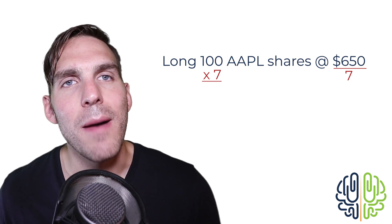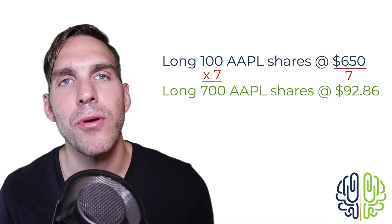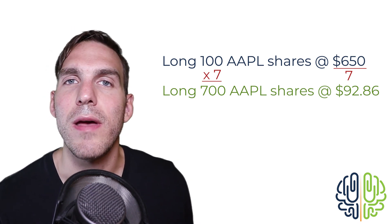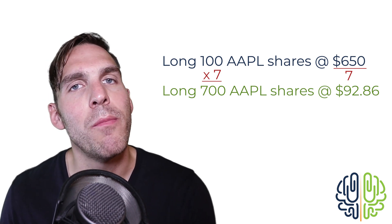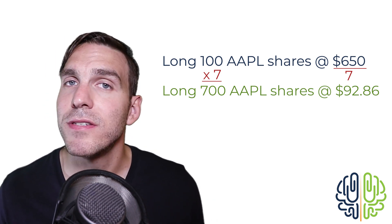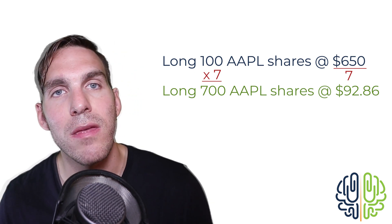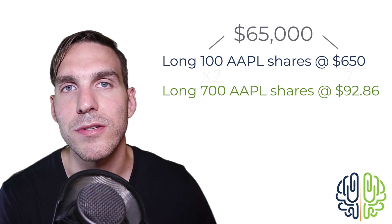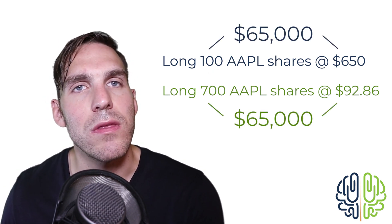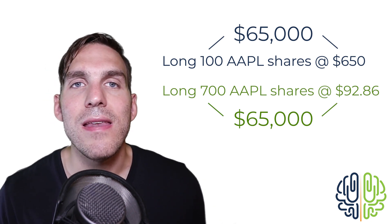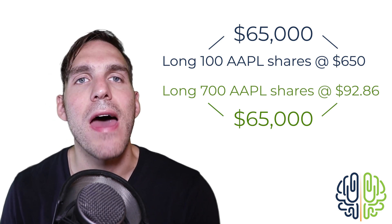The customer will end up with 700 shares of stock at $92.86 per share. The investor will end up with more shares, but each share will be worth proportionally less. The overall value of stock should be the same before and after the split. This customer started with $65,000 of Apple stock and will also end with $65,000 worth of Apple stock. If you don't end up with the same overall value after the stock split, your math was wrong.